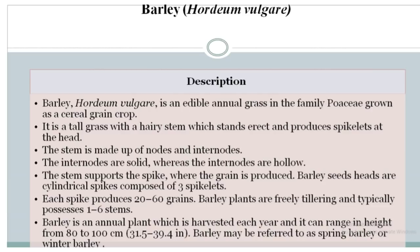Barley (Hordeum vulgare) is an edible annual grass in the family Poaceae, grown as a cereal grain crop. It is a tall grass with a hairy stem which stands erect and produces spikelets at the head. The stem is made up of nodes and internodes — the nodes are solid whereas the internodes are hollow. The stem produces a spike where the grain is produced. Barley seed has a cylindrical spike composed of three spikelets, which produce 20–60 grains. Barley plants are fairly tall and typically possess 1–6 stems. It is an annual plant that can range in height from 80–100 cm (31.5 to 39.4 inches) and may be referred to as spring barley or winter barley.